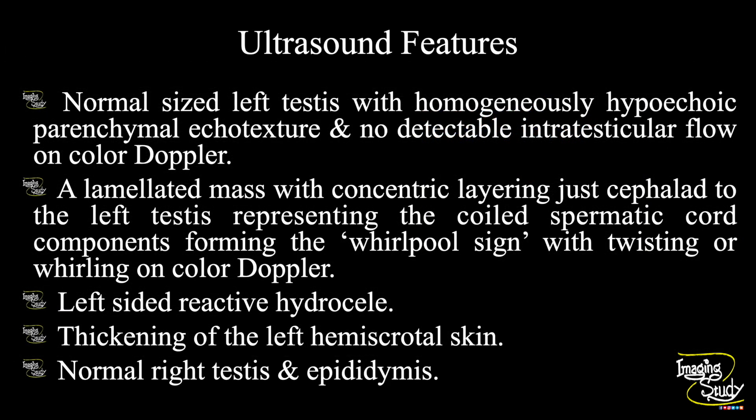In summary, a normal-sized left testis with homogeneously hypoechoic parenchymal echotexture and no detectable intratesticular flow on color Doppler is seen. A lamellated mass was noted with concentric layering just cephalad to the left testis representing the coiled spermatic cord components forming the whirlpool sign with twisting or whirling on color Doppler.